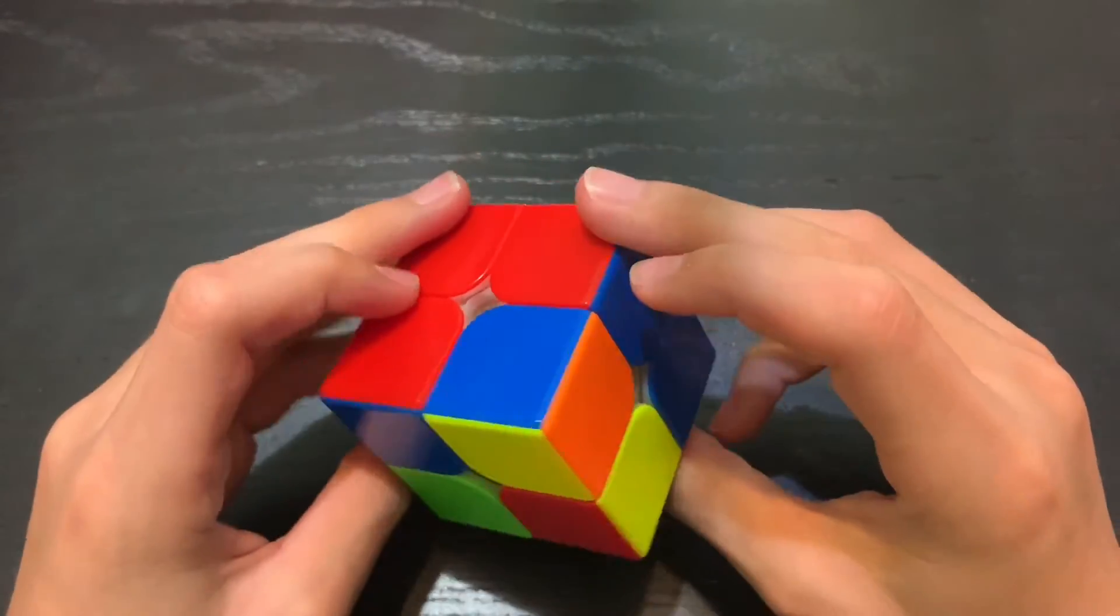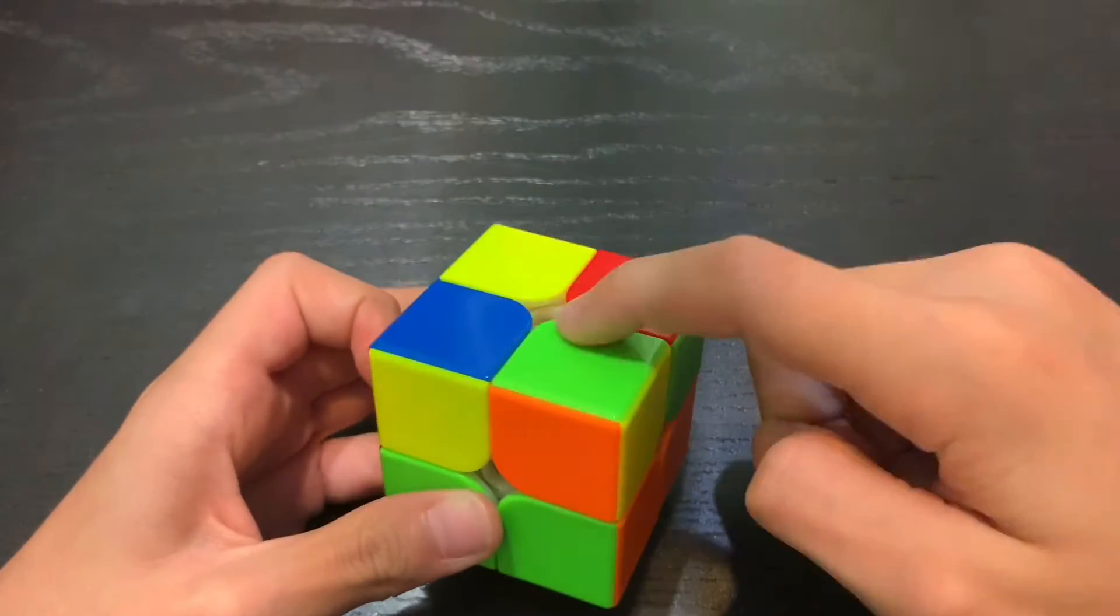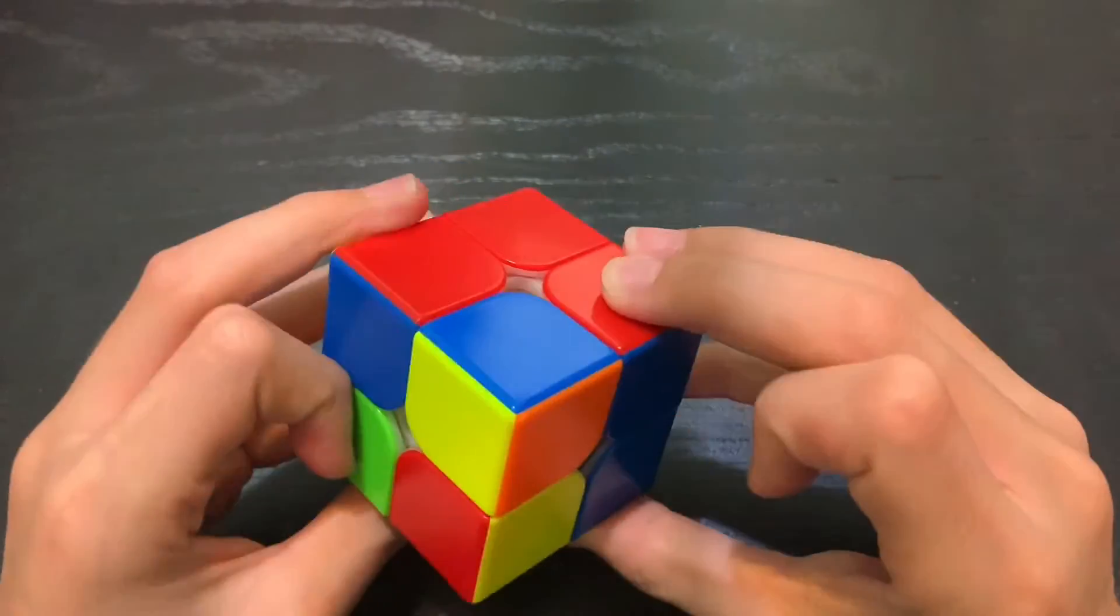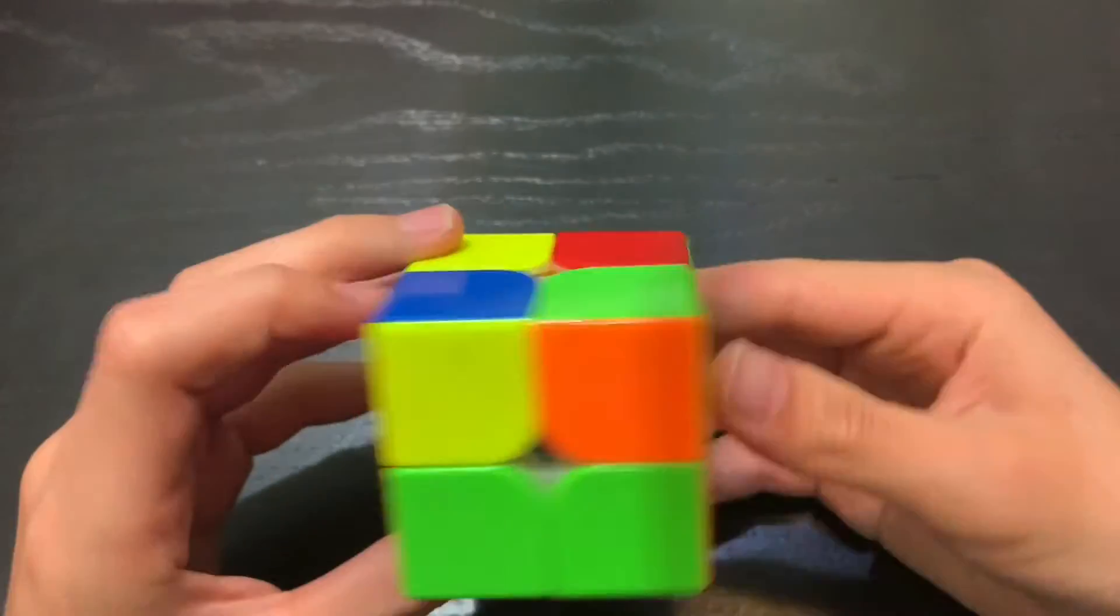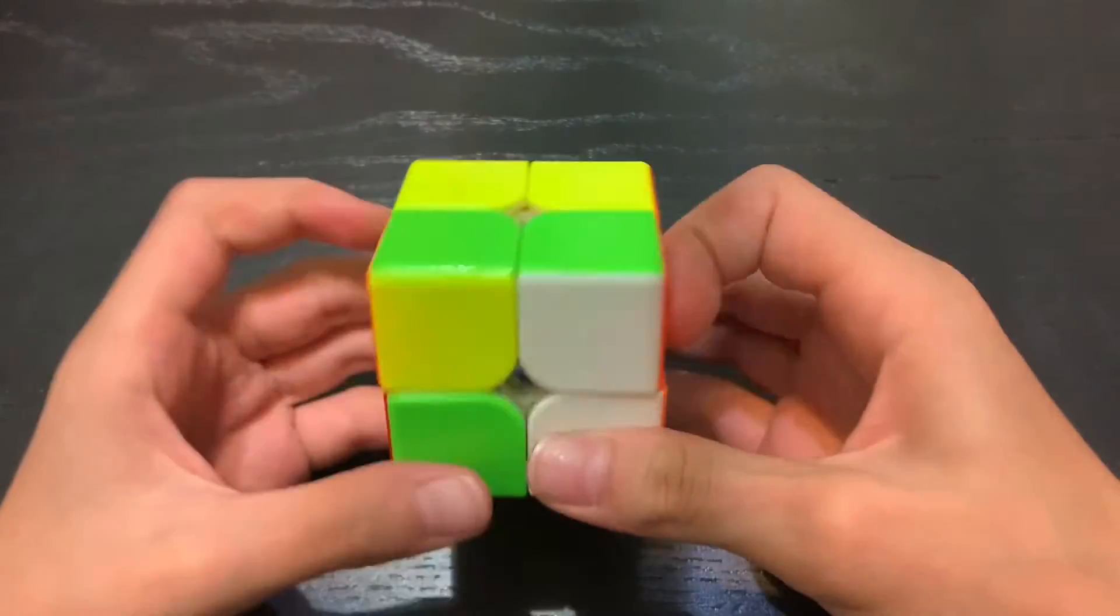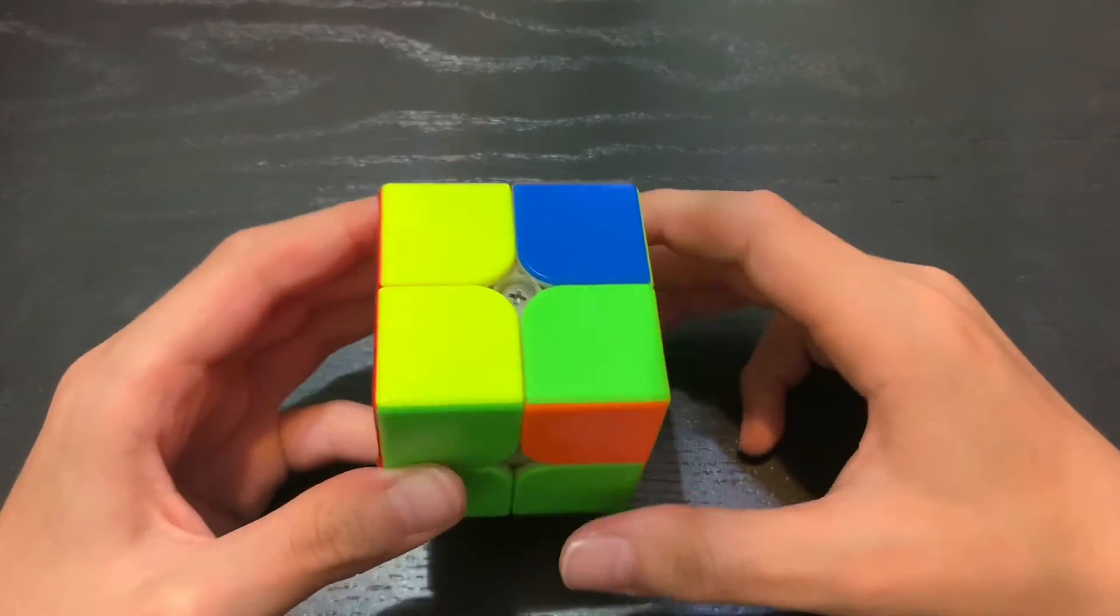So now for the corners, I will start with the yellow, green, and red. Now I look around, I only have one solve. So I will do the swapping algorithm. And the corners are now oriented.